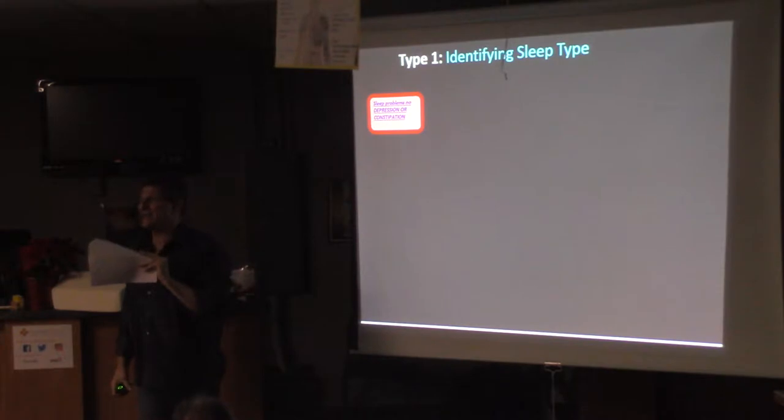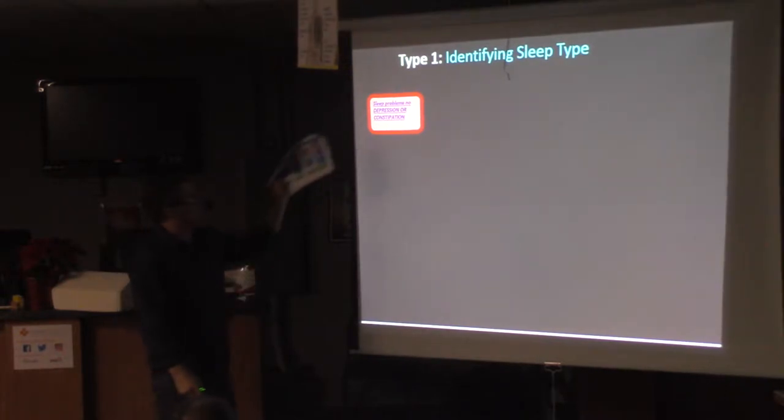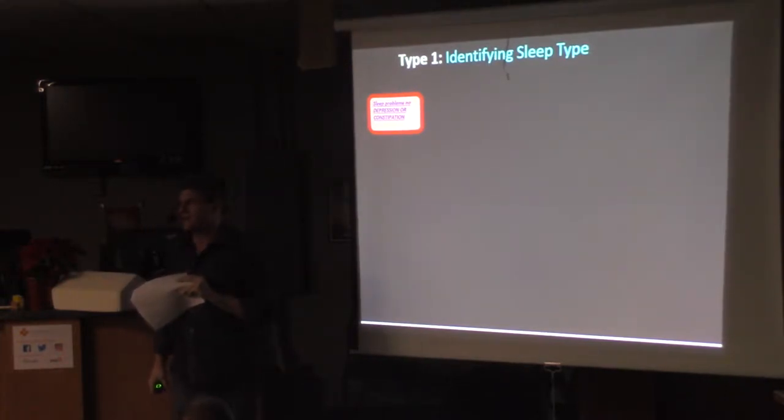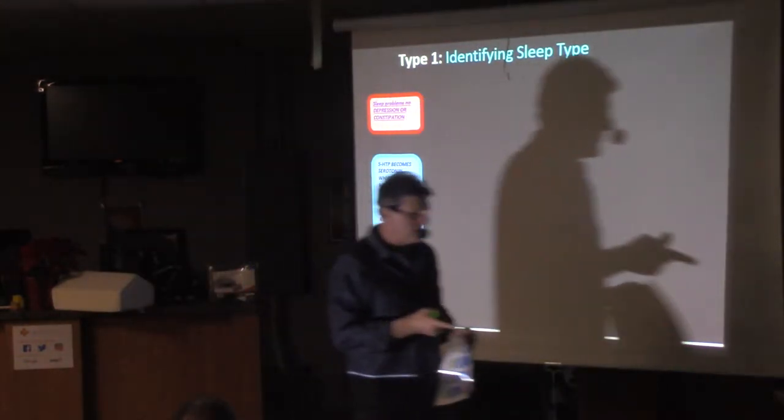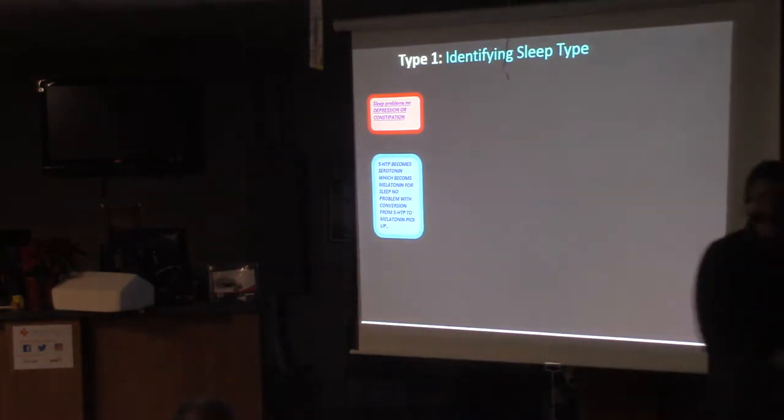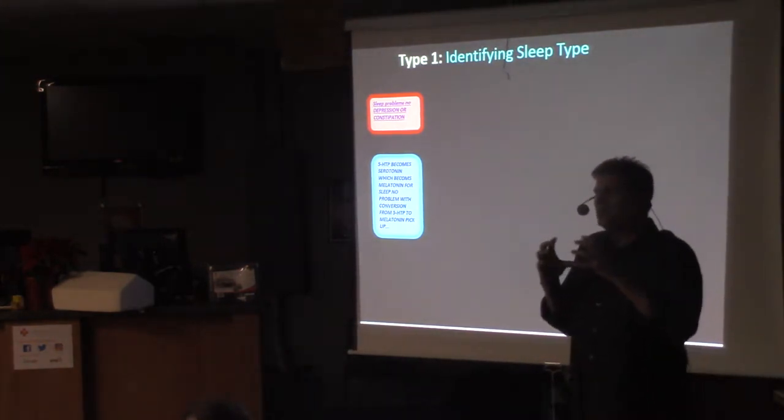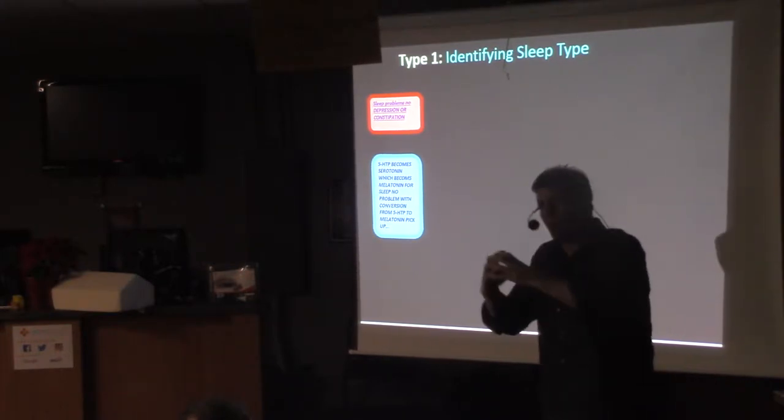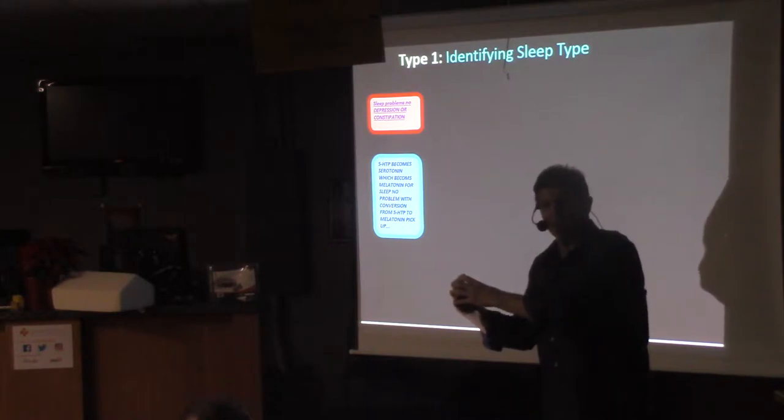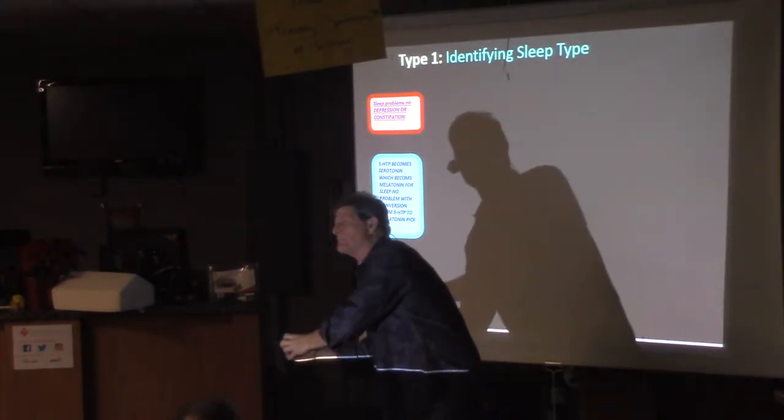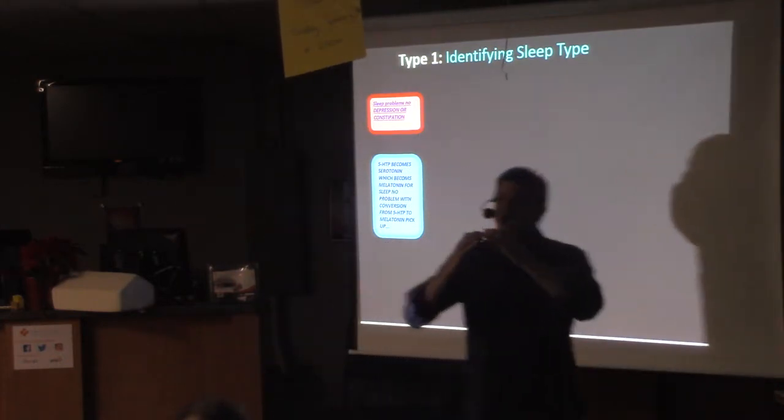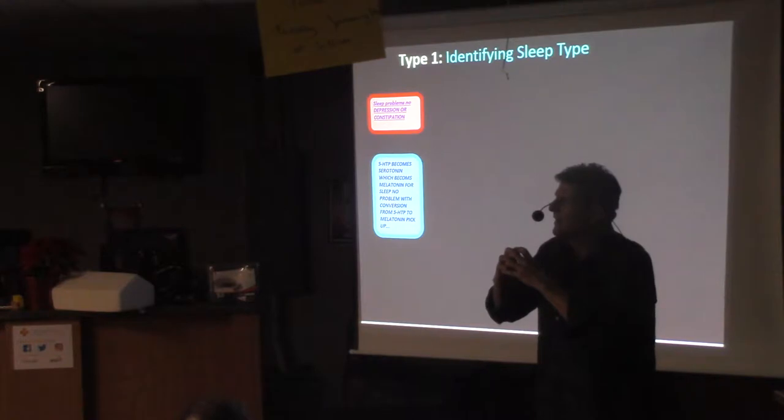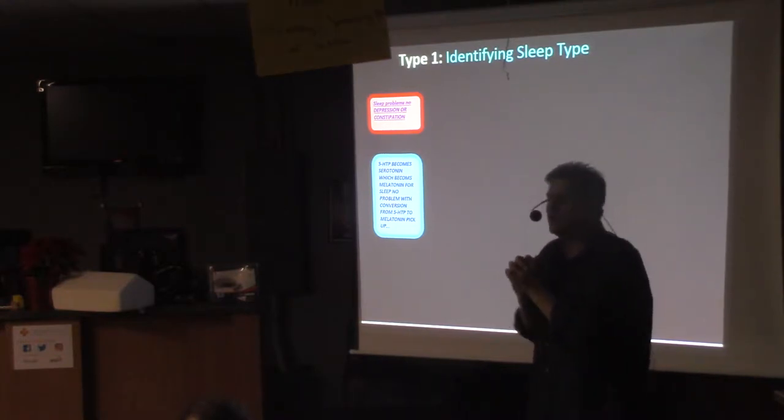Sleep problems, and you're depressed and have constipation. No, sorry. No depression or constipation. Why does that happen? 5-HTP. Now, I'm going to talk about this for a second. Tryptophan gets broken down into 5-HTP, which becomes serotonin. Serotonin becomes melatonin, which allows us to sleep. Why can't we buy tryptophan over-the-counter? Anybody know why?